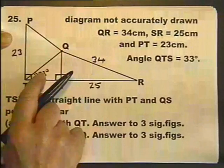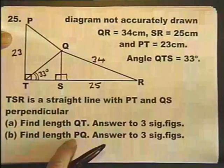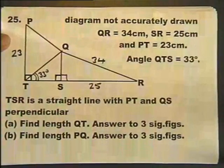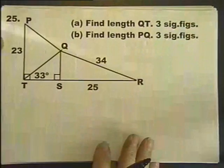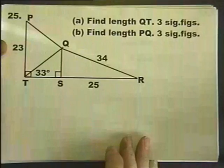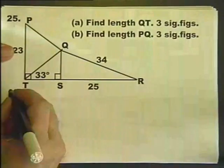Find QT and find PQ. Now, there is no room for me to do my working out. So, we have here, part A.